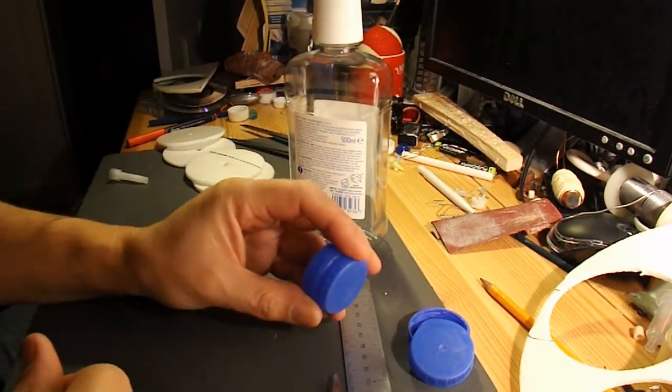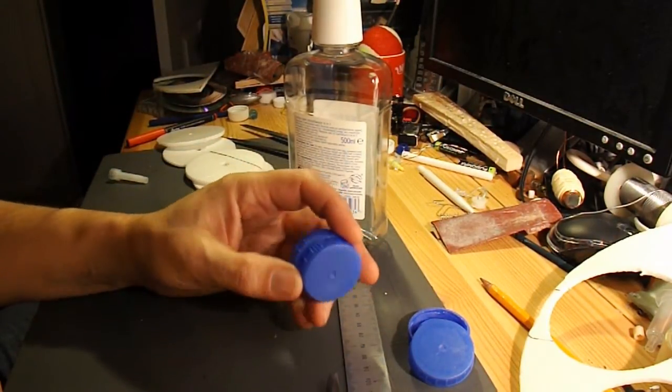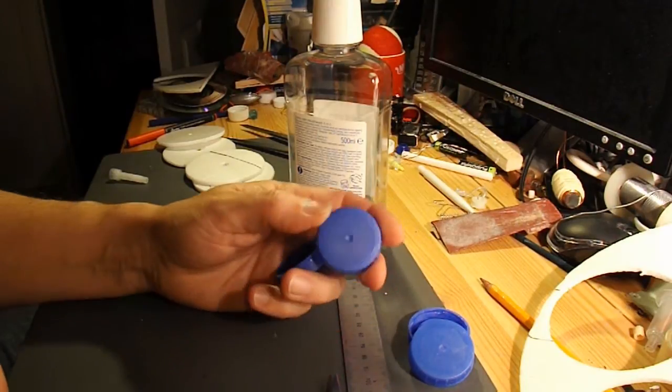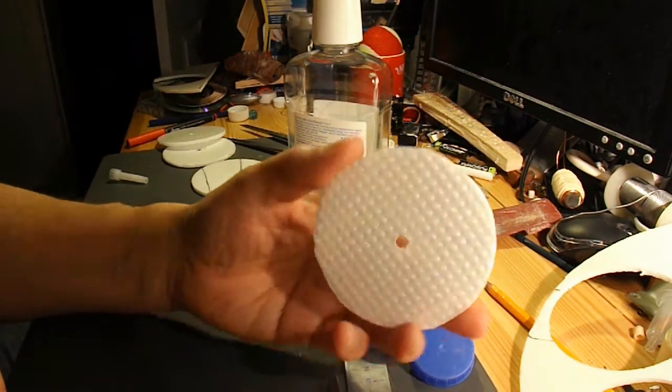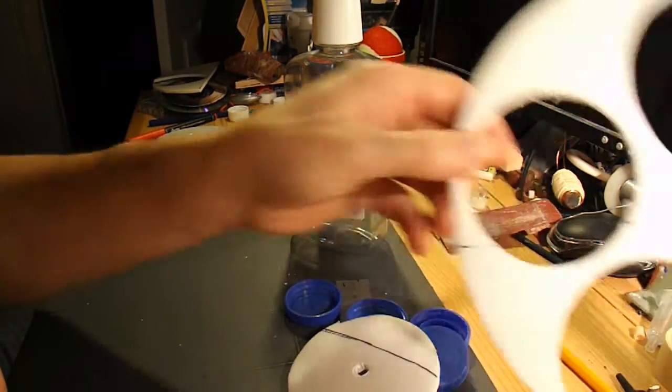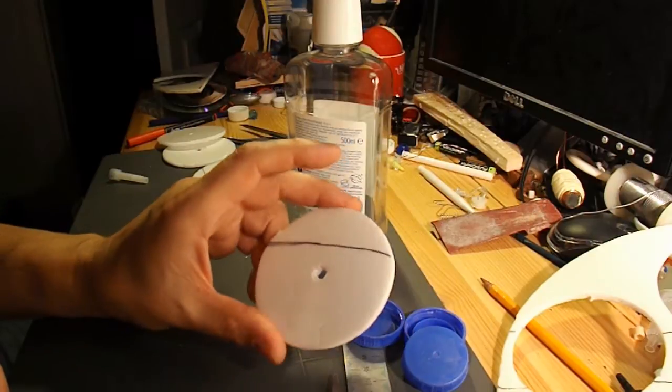What I'm just thinking at the moment is what to use for wheels. I've got milk bottle tops here that I could use. I've got some polystyrene discs that I've cut out of a pizza tray that I could use.